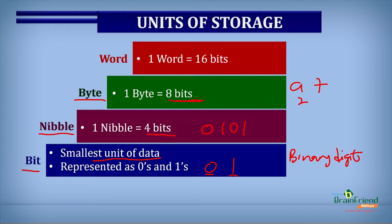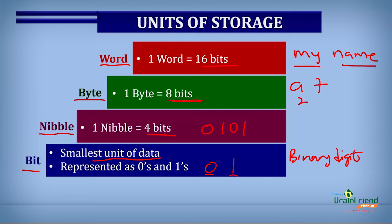The final unit of storage we're considering is the word. The word is made up of 16 bits, meaning a word is made up of two bytes. Two bytes make a word and 16 bits make a word. So when you type, for instance, 'my name,' how many words do we have? We have 'my' as a word and 'name' as a word. And what separates words? The space. So each word is equal to 16 bits.